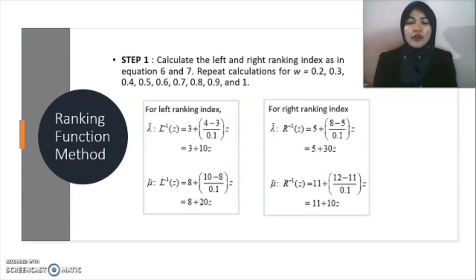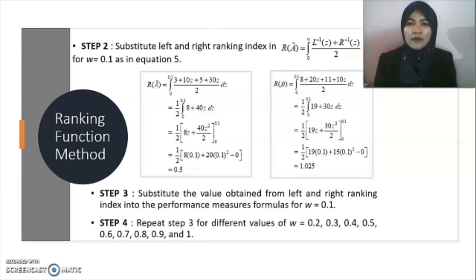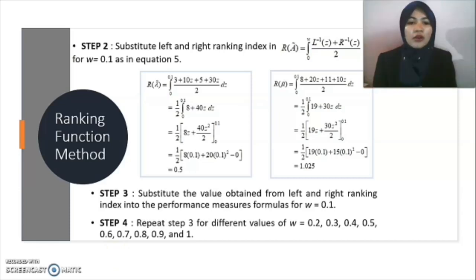The following are the steps for the ranking function method. For step one, calculate the left and right ranking index as in equations 6 and 7 for W equals 0.1, then repeat the calculation for W equals 0.2 through 1. For step two, substitute the left and right ranking index in the formula as in equation 5 for W equals 0.1; we calculated and obtained lambda for the ranking index as 0.5 and mu for the ranking index as 1.025. For step three, substitute the values obtained into the performance measures formula for W equals 0.1. For step four, repeat step three for different values of W as mentioned.